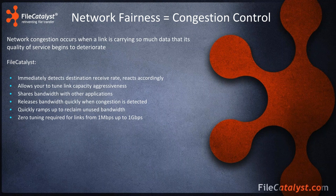Regarding congestion control: congestion happens when you're trying to push more data than the link can handle. File Catalyst immediately detects the destination receive rate, so as soon as the transfer starts we determine the maximum speed on the link and start transferring at that speed. As other applications consume bandwidth, File Catalyst detects it and slows down; as soon as those applications finish — whether streaming YouTube or performing in-house transfers — File Catalyst picks back up and reclaims the unused bandwidth. For most deployments from 1 megabit to 1 gigabit per second, no tuning is required.